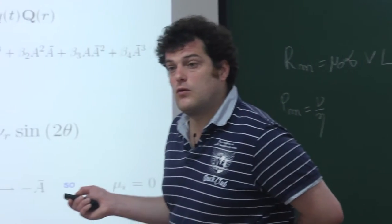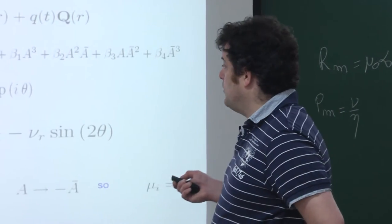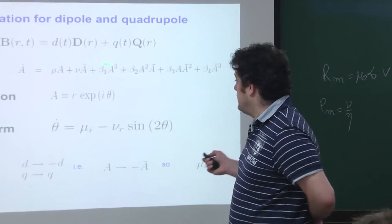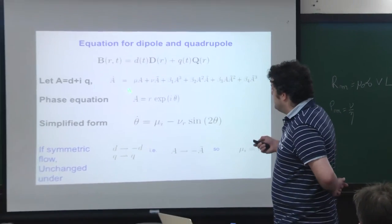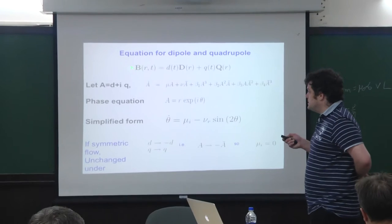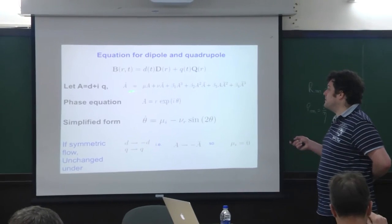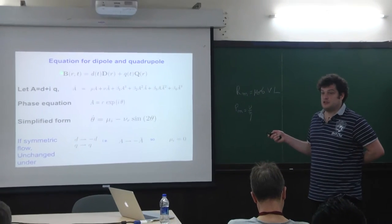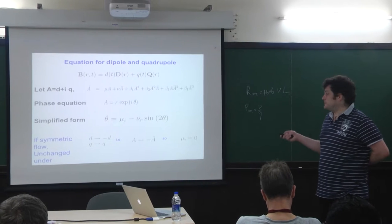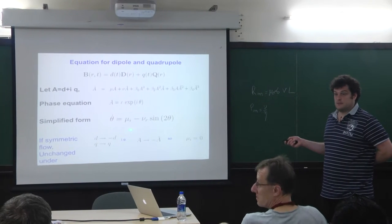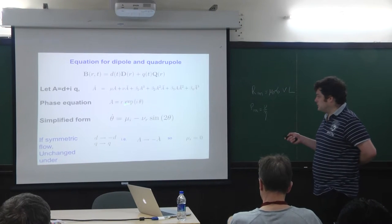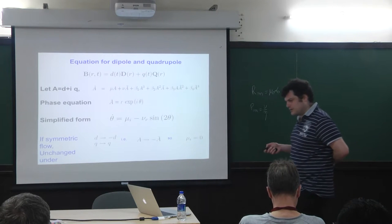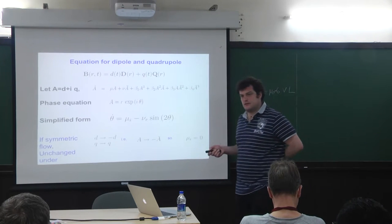The MHD equation is invariant under B → −B, therefore there are no quadratic terms — they vanish. This would not be true if we were considering Hall effects, for instance.